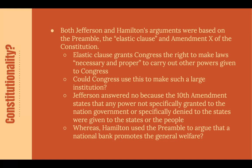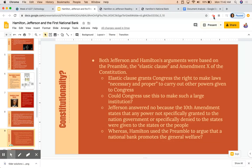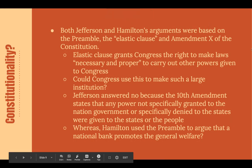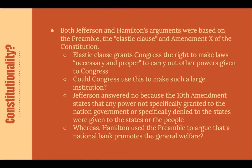A little background on the constitutionality: both Jefferson and Hamilton's arguments were based on the preamble, the Elastic Clause, and the Tenth Amendment. Hamilton argued that the Elastic Clause grants Congress the right to make laws that are both necessary and proper to carry out other powers given to Congress. For example, a place for the government to deposit funds would make collecting taxes easier — Hamilton deemed this both necessary and proper. Therefore, he said Congress absolutely has the constitutional power to create a national bank under the Elastic Clause.